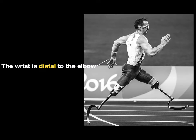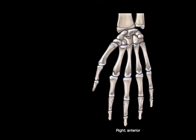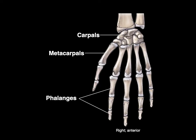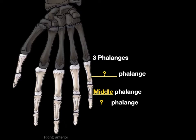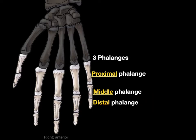That's one way these words proximal and distal are used. Another way is we look at the bones of the hand — there are the carpals, the metacarpals, and the phalanges. When we look at the three phalanges on your little finger, one is called the middle phalange. The others are called the proximal phalange and the distal phalange, because the distal one is farther away and the proximal phalange is closer to the hand.